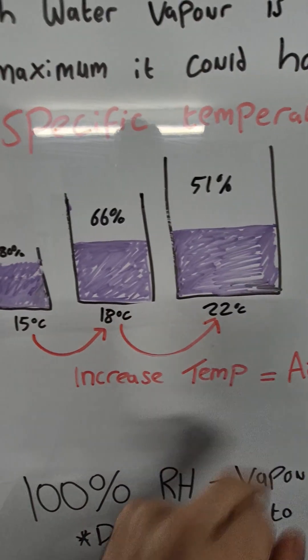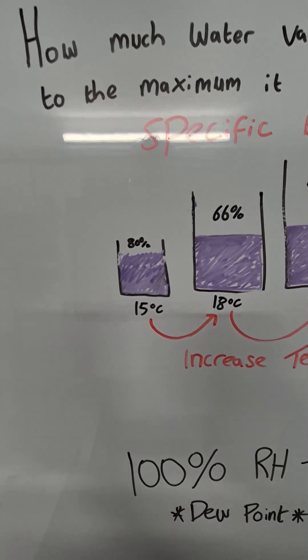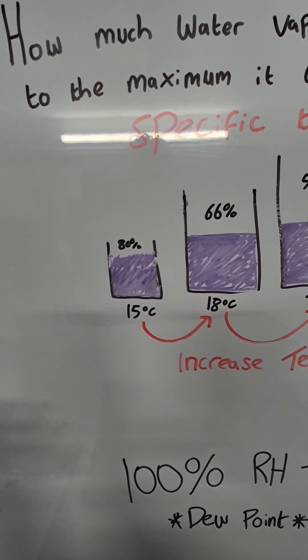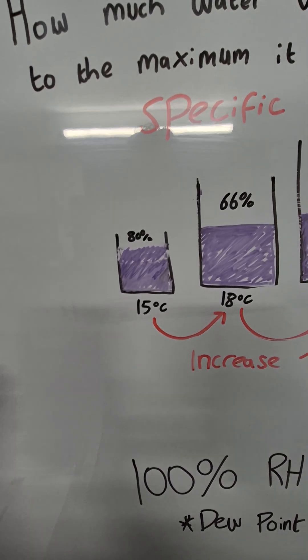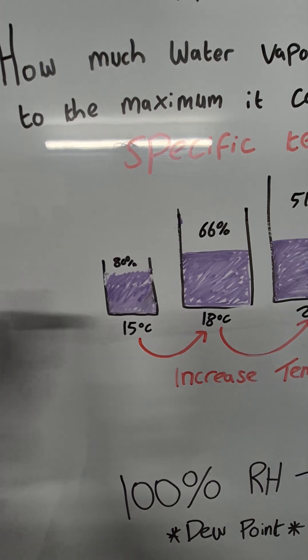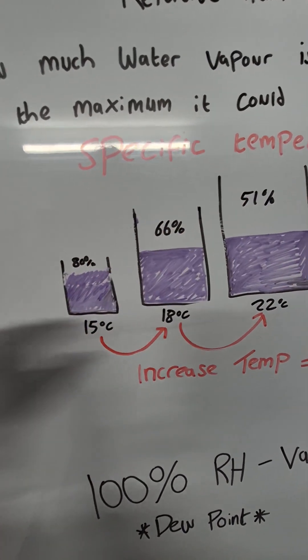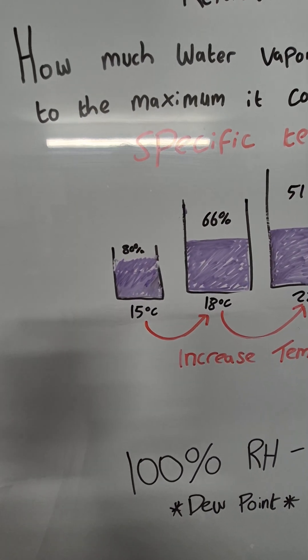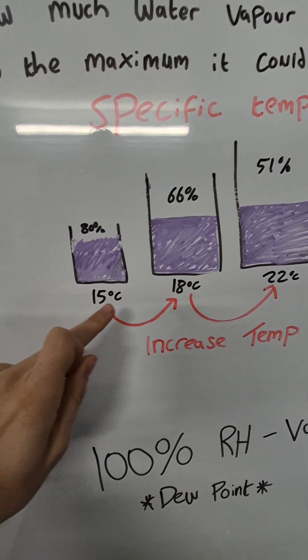So in my scenario, I've just created a load of moisture and that moisture, say in a shower room for example, I've created so many units of moisture and that will be the same in all of these scenarios, the actual water vapour. But what changes is the relative humidity dependent on the temperature.